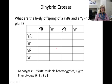A cross between individuals heterozygous for two traits is called a dihybrid cross. Each plant has four possible gamete types. Stop the video and fill in the chart, and you can check Chapter 14 to make sure your answers are correct.